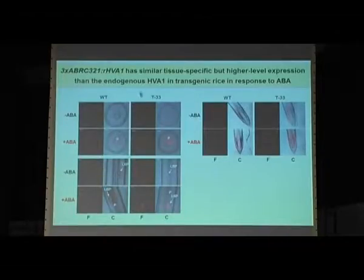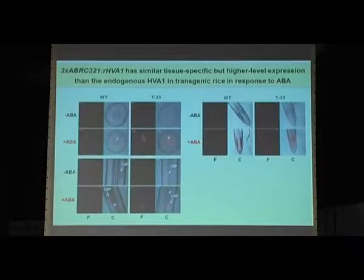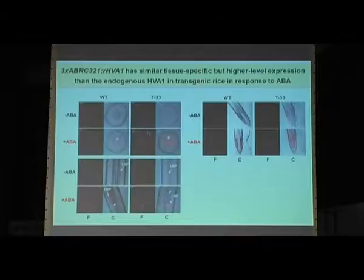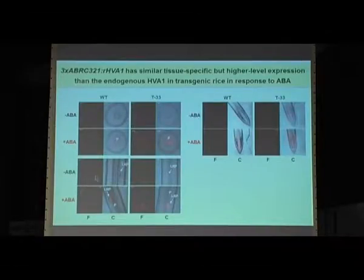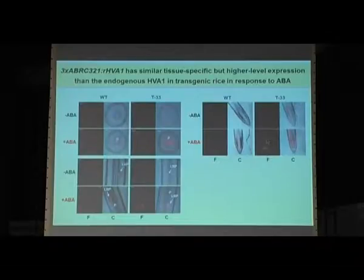We examined ABRC321-HVA1 expression in roots using immunocytochemistry to detect HVA1 protein. Without ABA, in cross-section and longitudinal section of root and root tip, expression is very low in both wild type and transgenic lines. But after ABA induction, there is significant accumulation of HVA1 in endodermis, cortex, lateral root primordia, root tip, and vascular tissue. Transgenic lines always accumulate HVA1 at much higher levels than wild type.